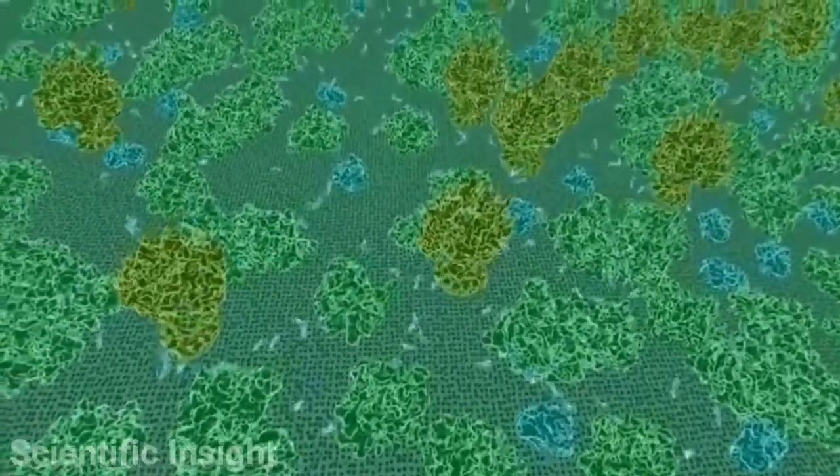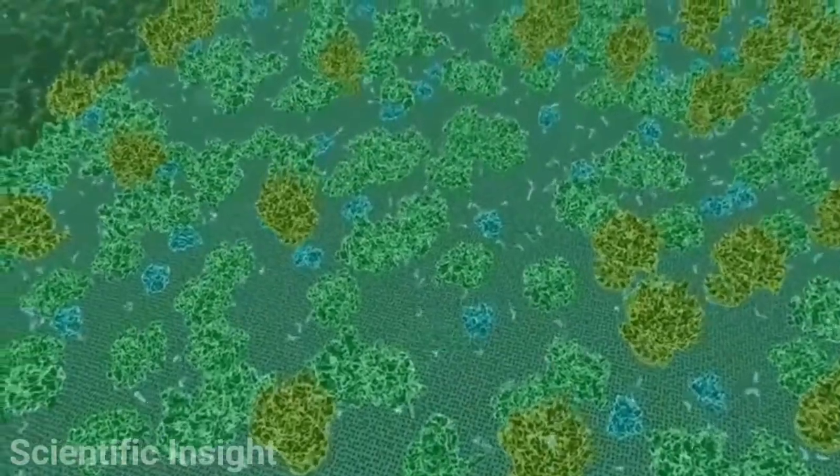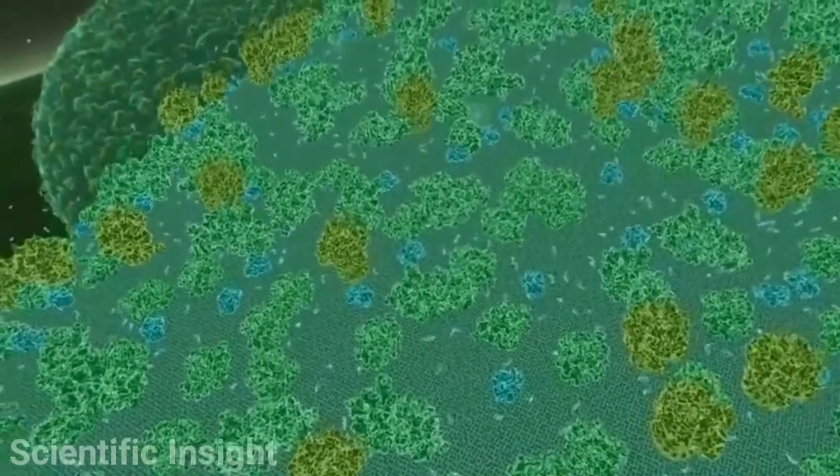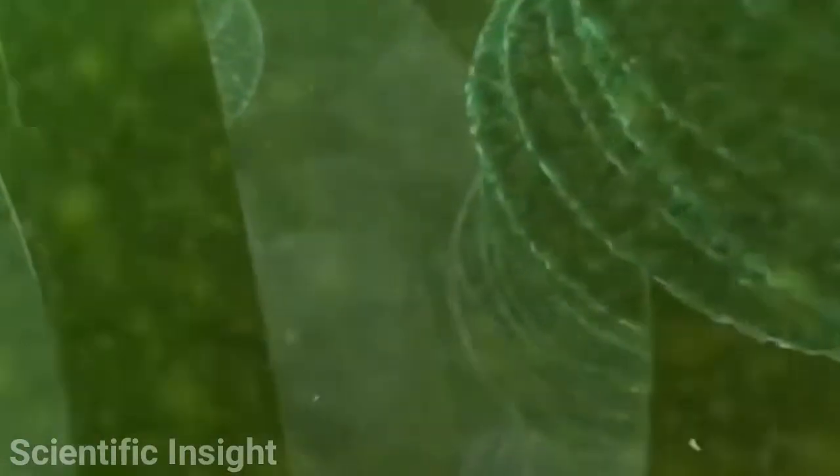The pulses of light in the thylakoid membrane in which the photosystems are embedded represent energized electrons being passed from one photosystem to another, passing along the energy which will be stored in the bonds of ATP.